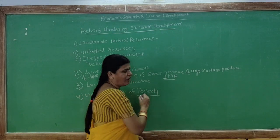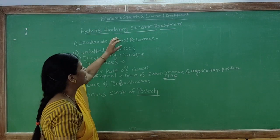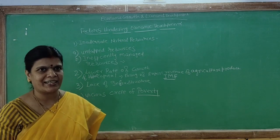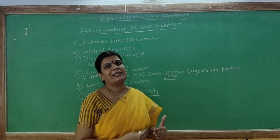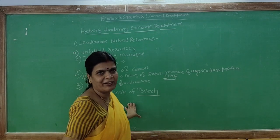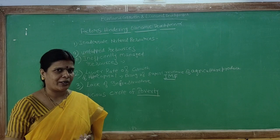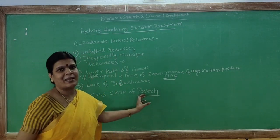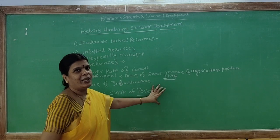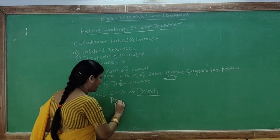The fourth hindrance is the vicious circle of poverty — a very important factor which comes in the way of economic development. Developed countries have good education facilities, health facilities, high capital investment, and high savings. But in underdeveloped and developing countries like India, this is the net which comes in the way of development. Once they enter this circle of poverty, they could not come out of it.